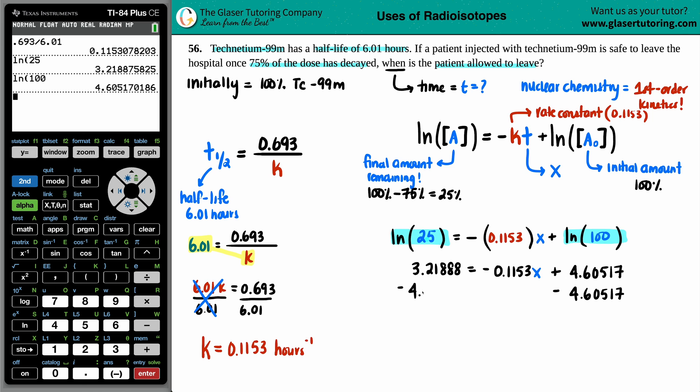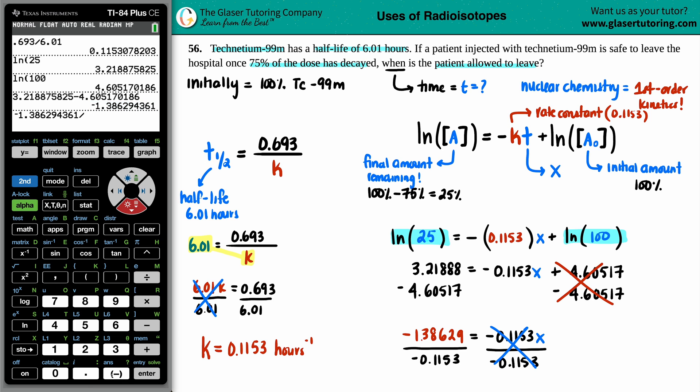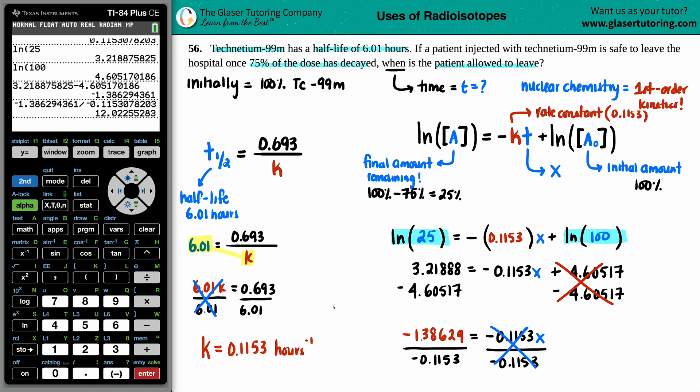We want to get x by itself. So, we're going to subtract this number on both sides. Minus 4.60517. This will cancel out. Now, I'm going to take the full number. So, I'm going to take this minus this. And I get negative 1.38629. Equals negative 0.1153. And that's times by the x value. And then just solve for x. I'm going to divide by negative 0.1153. I'll use the whole k value that I found out from before. Just so that we don't run into any errors in rounding. This gets cancelled out. And then we're going to take this whole number, divide it by, I think we have to make it negative. And then go find that value. And, yep. Seems good to me.